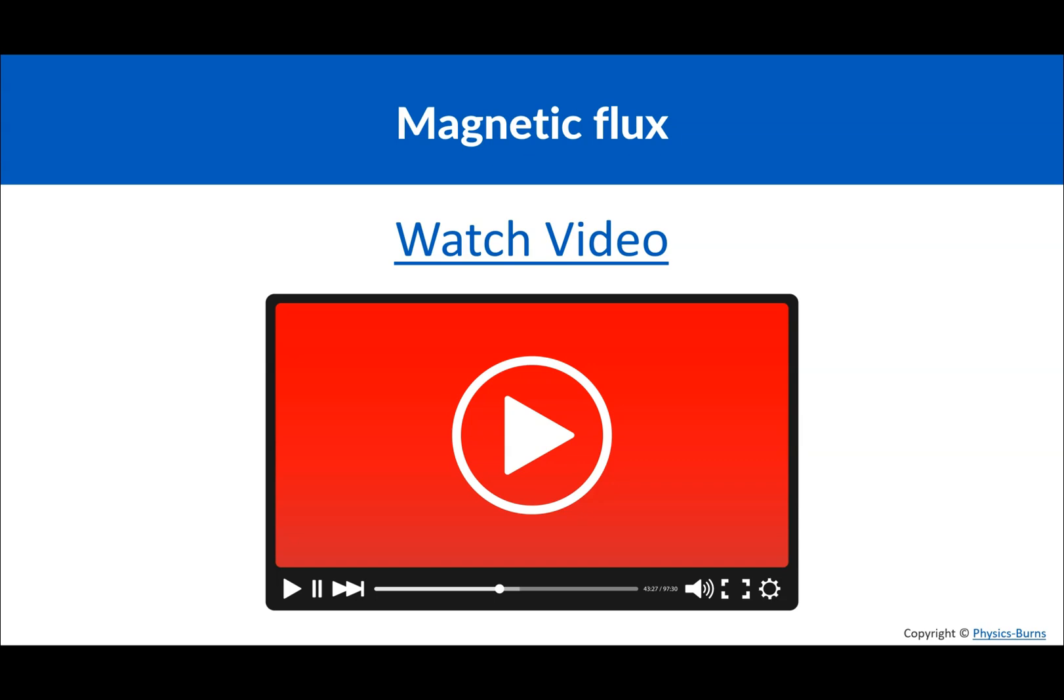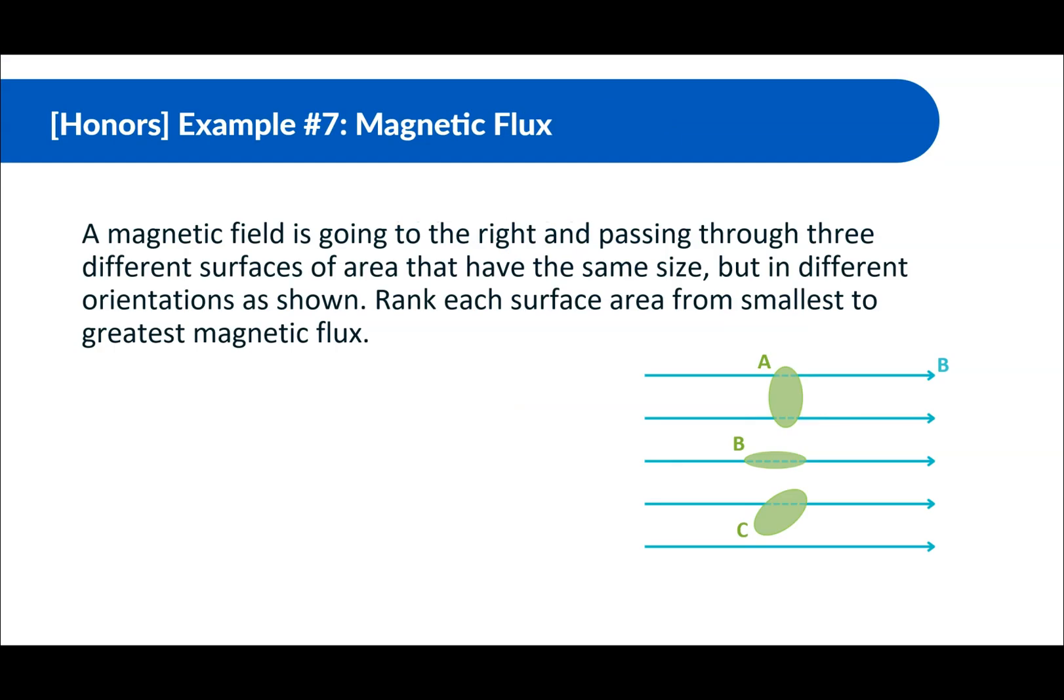A magnetic field is going to the right and passing through three different surfaces of areas that have the same size, but in different orientations as shown. Rank each surface area from smallest to greatest magnetic flux. Okay.